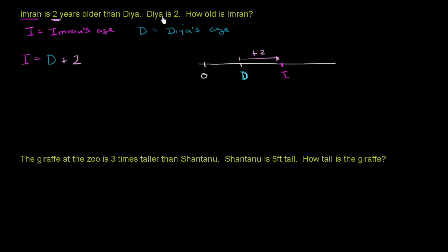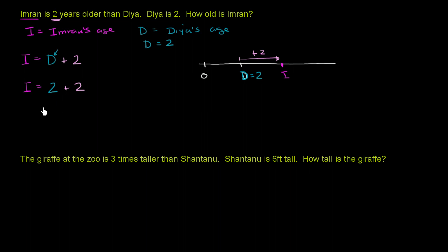Then they tell us that Diyah is two, so D, which we're using to represent Diyah's age, is equal to two. We can rewrite this as: Imran's age is equal to Diyah's age, which we now know to be two, plus two. Two plus two is four, so Imran's age is equal to four.